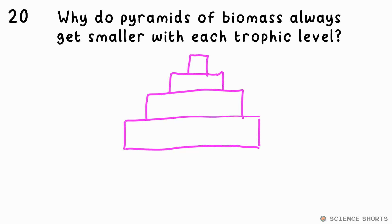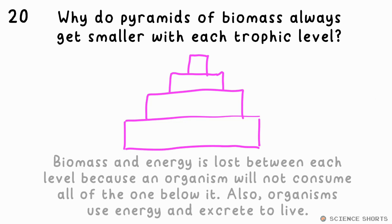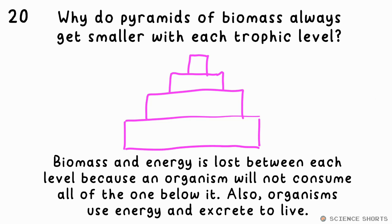Question 20. Why do pyramids of biomass always get smaller going up each trophic level? Biomass is always lost at each level due to the next organism not consuming all of the biomass, and they also use energy and excrete biomass as they go about their lives.